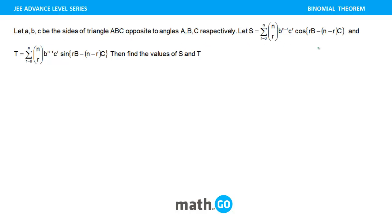S is given to be this particular value which is there and T is something this and you need to find the value of S and T. If you see that S and T has a very small change that instead of cos here, you have a sine here, right? This is the variation that people have in the equation.